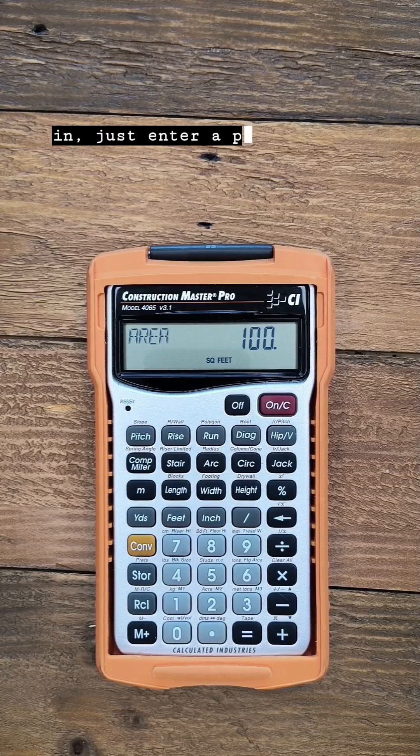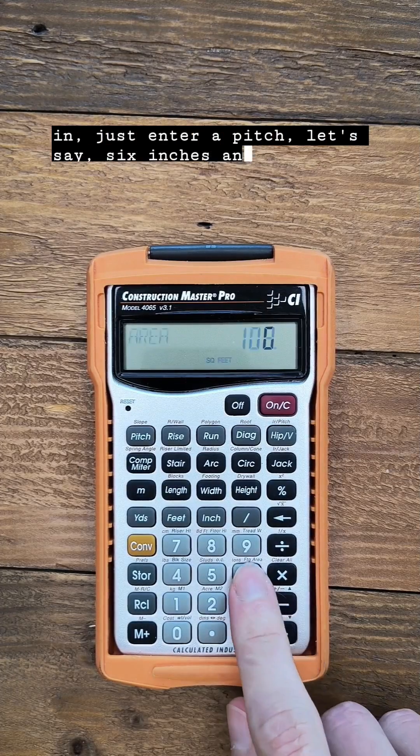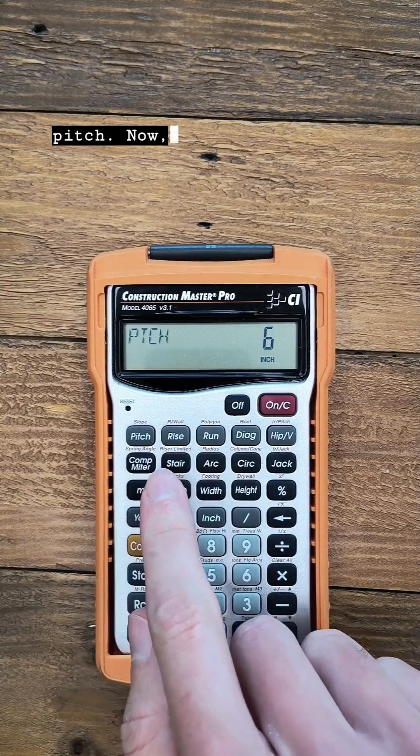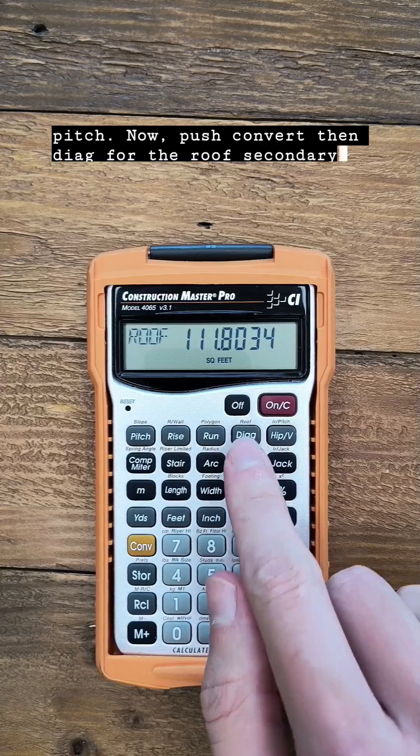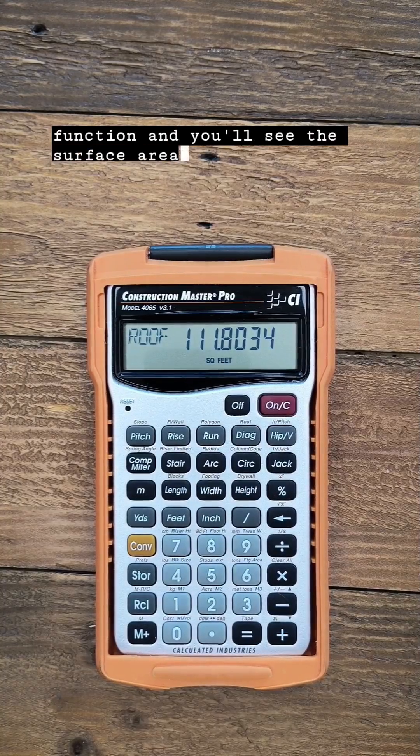So to factor that in, just enter a pitch, let's say 6 inches, and push pitch. Now push convert then diag for the roof secondary function, and you'll see the surface area of the roof.